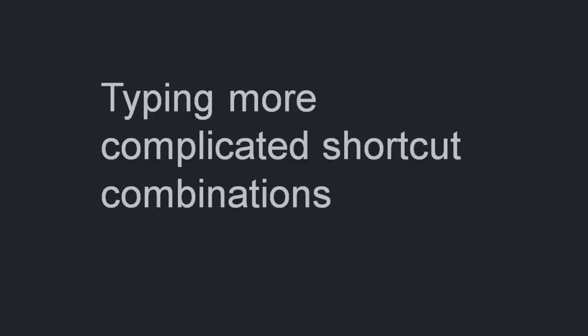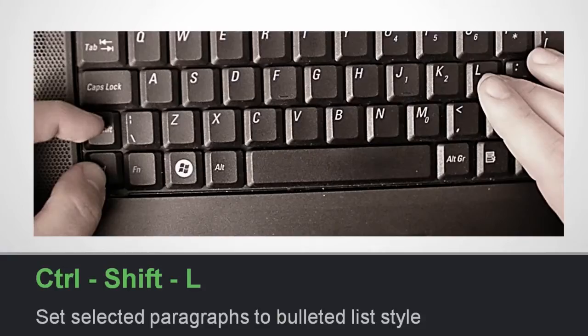There really is no one right way of holding down combinations of modifier keys — everybody will have to decide what is most comfortable and productive for them. For example, to type a shortcut such as CTRL-SHIFT, I use my thumb and index finger to hold down CTRL and SHIFT, and then my right hand to type the shortcut key.